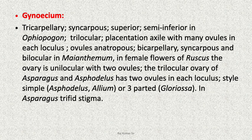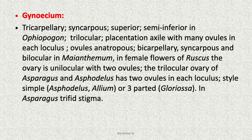The gynoecium is tricarpellary, syncarpous, superior, semi-inferior in Ophiopogon, trilocular; placentation is axile with many ovules in each loculus. Ovules are anatropous. Bicarpellary, syncarpous and bilocular in Maianthemum. In female flowers of Ruscus, the ovary is unilocular with two ovules. The trilocular ovary of Asparagus and Asphodelus has two ovules in each loculus. Style is simple, for example Asphodelus and Allium, or it can be three-parted as in Gloriosa. In Asparagus there is a trifid stigma.